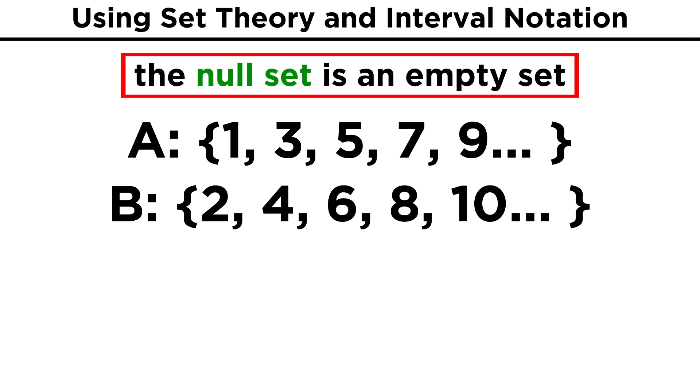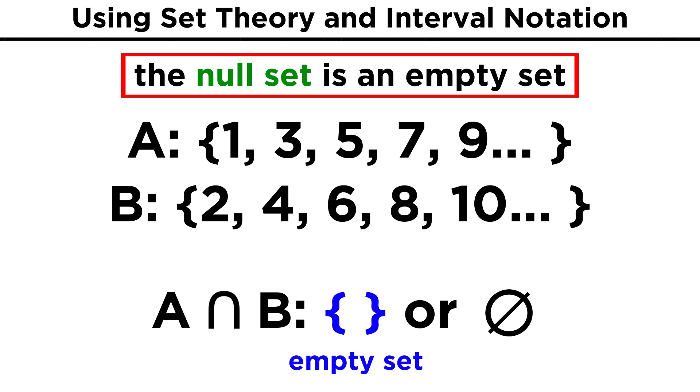Sometimes we might have to deal with a set that has no elements at all. For example, let's find the intersection between the set containing all the odd natural numbers and the set containing all the even natural numbers. Because these sets have no elements in common, their intersection has nothing in it. This will be the empty set, otherwise known as the null set. This is represented by the Greek letter phi, which looks kind of like a zero with a line through it. Remember, this isn't zero, because zero is an element that could be included in a set. The null set means there is nothing in it, not even zero.